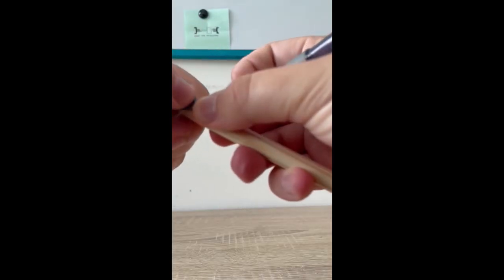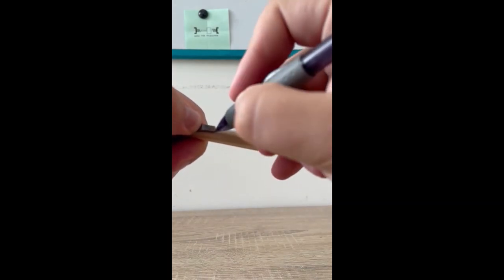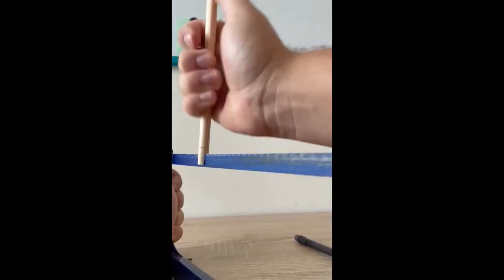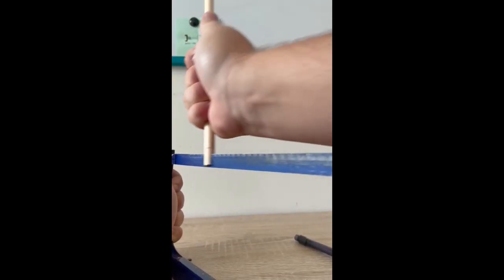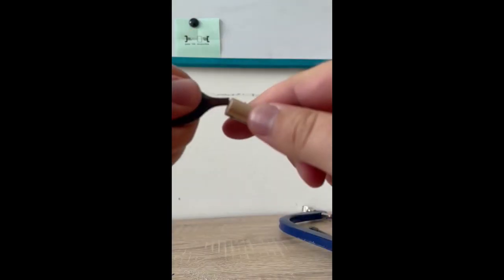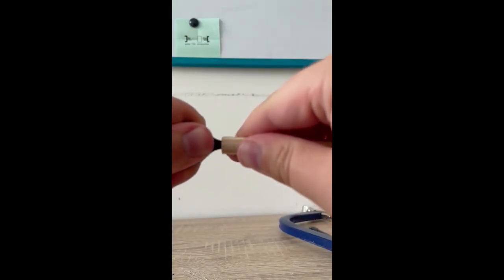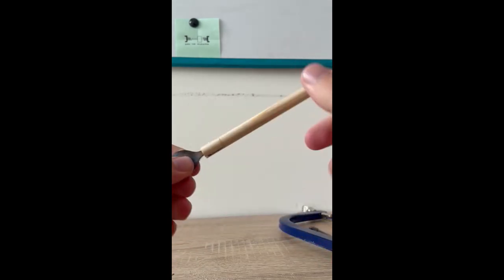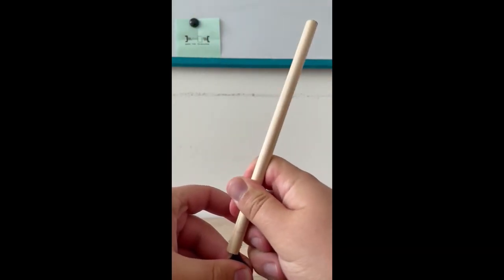Next I measured to see how deep I needed to cut for the arrowhead to stay in the shaft. To get the arrowhead deep inside the shaft, I pressed down on the cutting board to help.